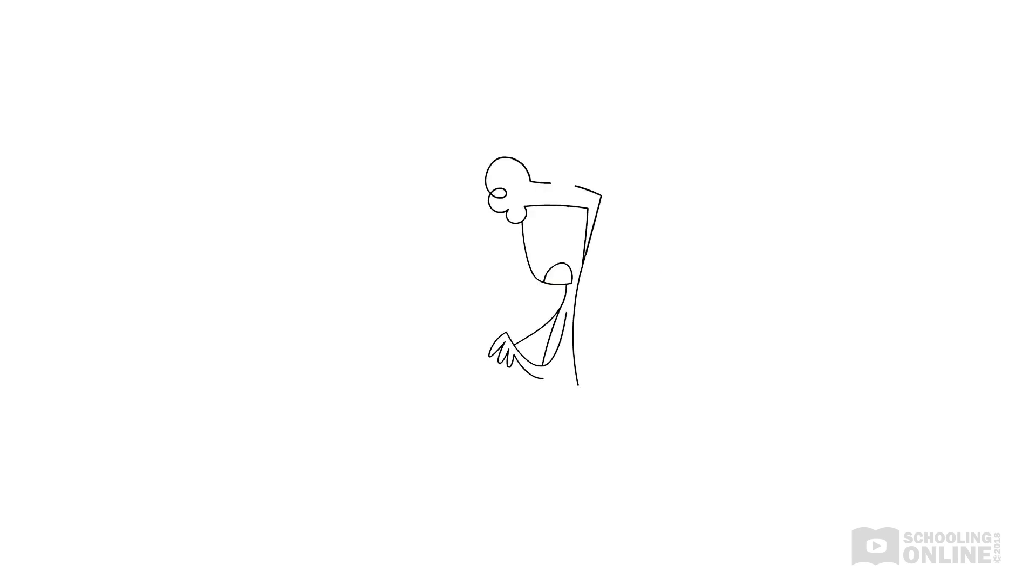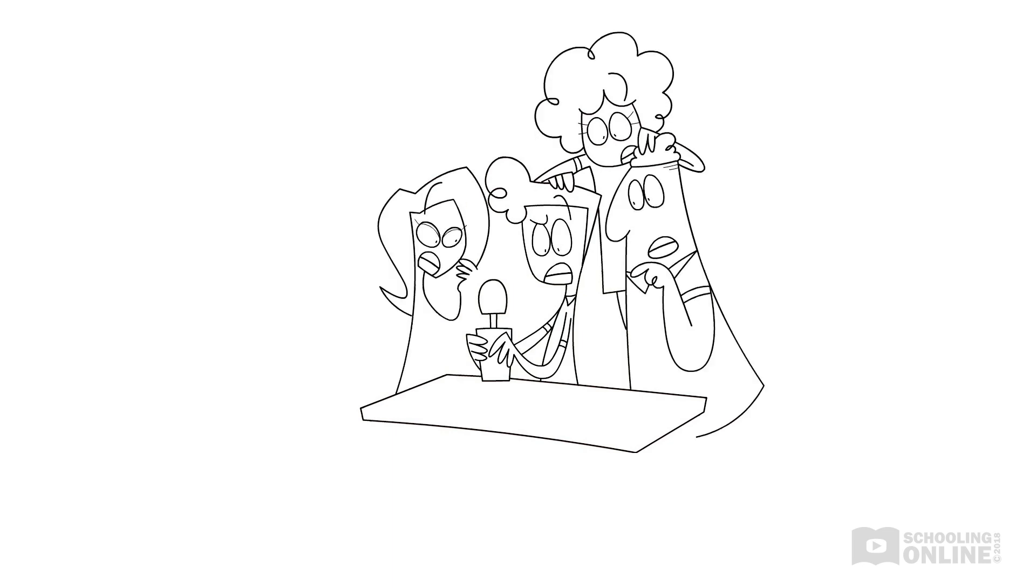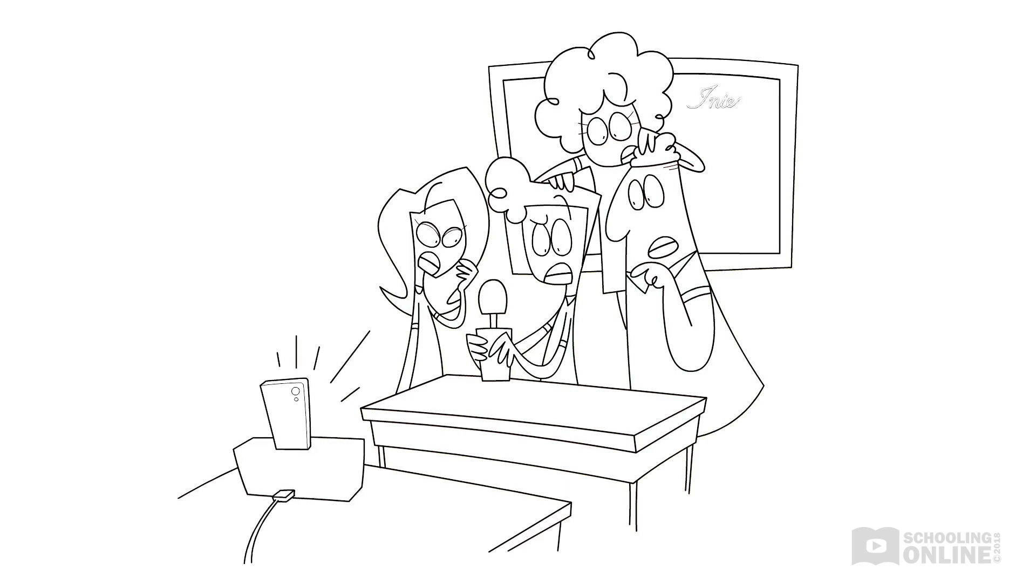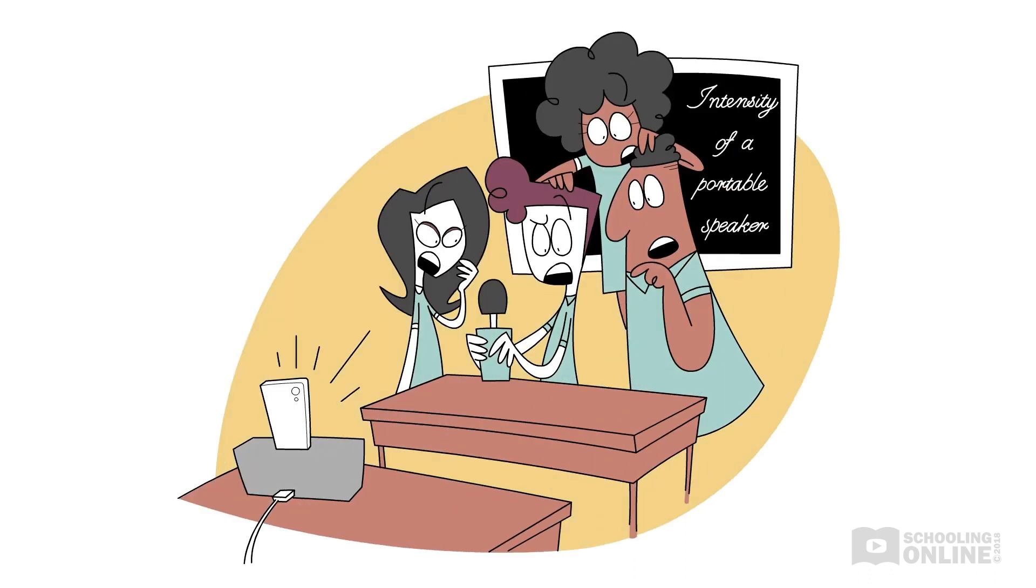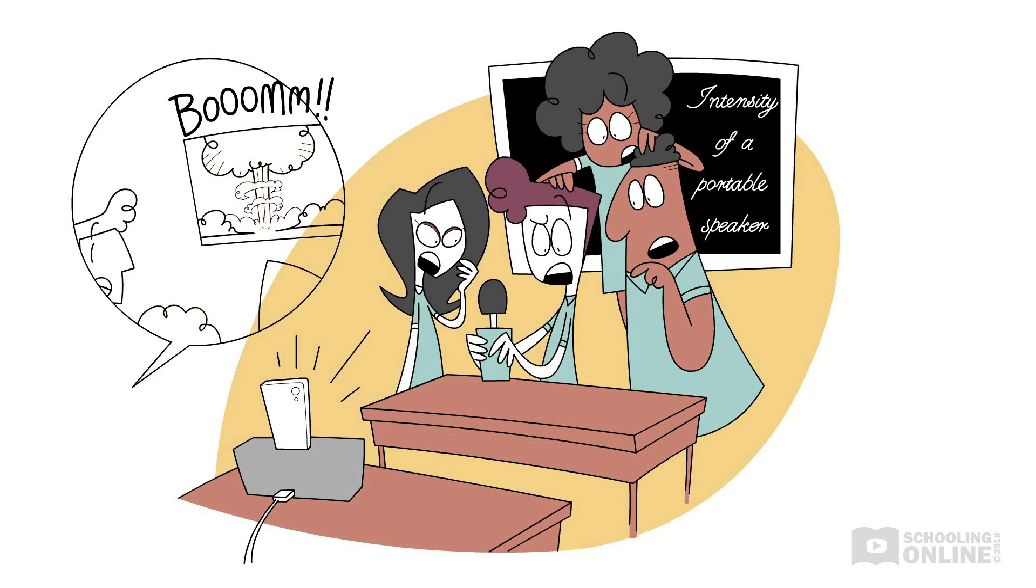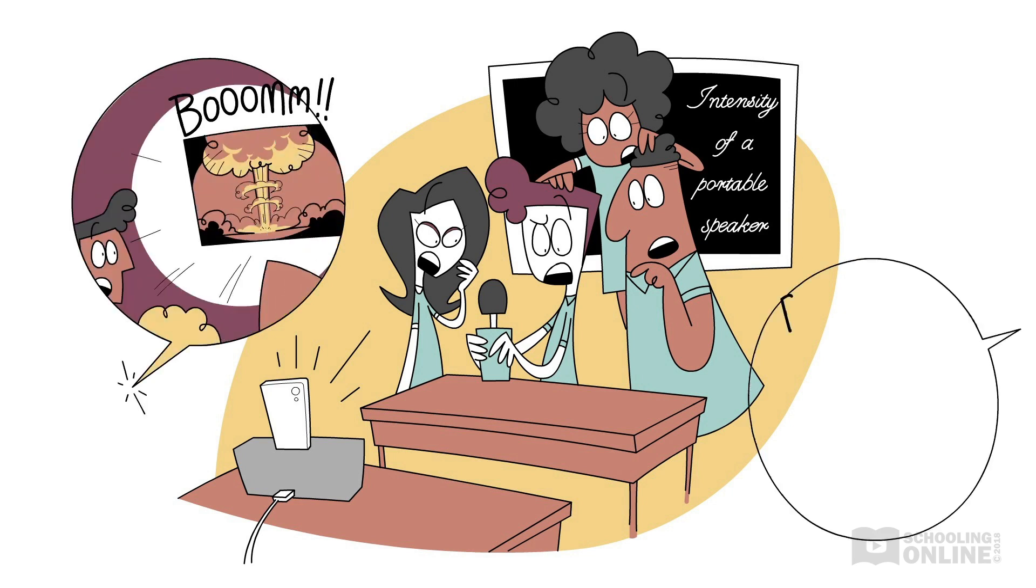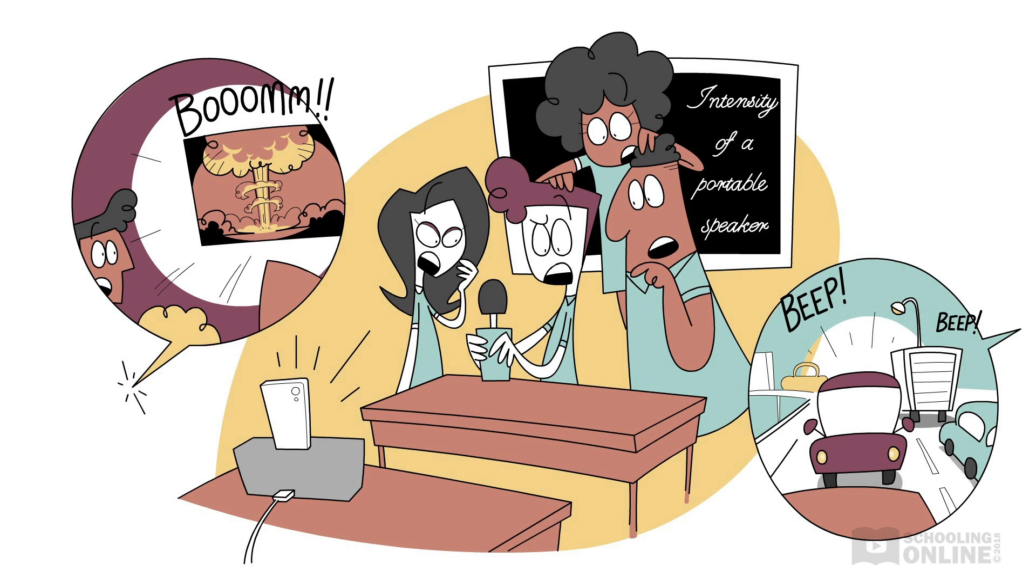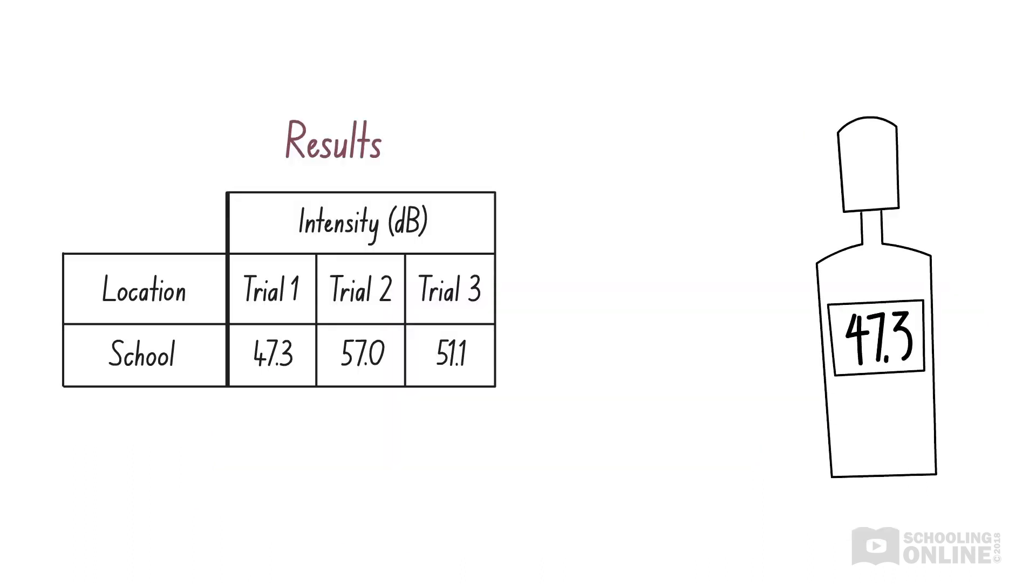Let's consider another example. Suppose that you are trying to measure the intensity of a portable speaker from a distance of 3 metres. You set the speaker to its maximum volume and use a decibel meter to record the sound intensity. Unfortunately, you can hear many sounds in the background. The class next door is watching a documentary on the history of unexpectedly loud random noises, and there's a traffic jam along the road in front of your school. You manage to collect 3 measurements before the end of the class.